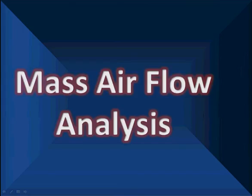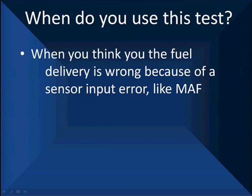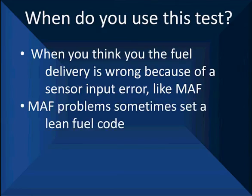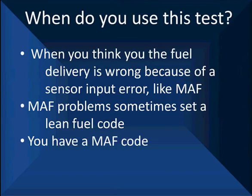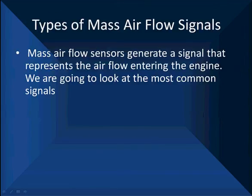Mass air flow signal analysis is one of the more critical things to test. We have to talk about when you use this test. You use it when you think the fuel delivery is wrong because of a sensor input error, like the mass air flow. Math problems sometimes set a lean fuel code without setting a mass air flow code, but if you have a mass air flow code, certainly go ahead and do this test.